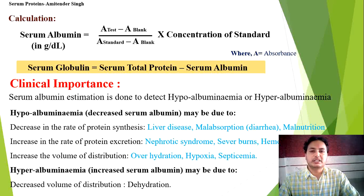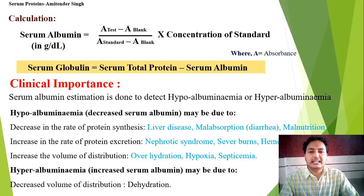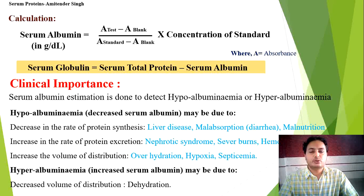To find serum globulin, subtract serum albumin from total serum protein — and serum globulin value is obtained. The clinical importance of serum albumin: hypoalbuminemia is when albumin in blood falls below the normal value, and hyperalbuminemia is when it rises above normal. These conditions occur in liver disease, malabsorption, malnutrition, nephrotic syndrome, severe burns, overhydration, hypoxia (where oxygen concentration is reduced), and septicemia. Albumin concentration increases in dehydration.